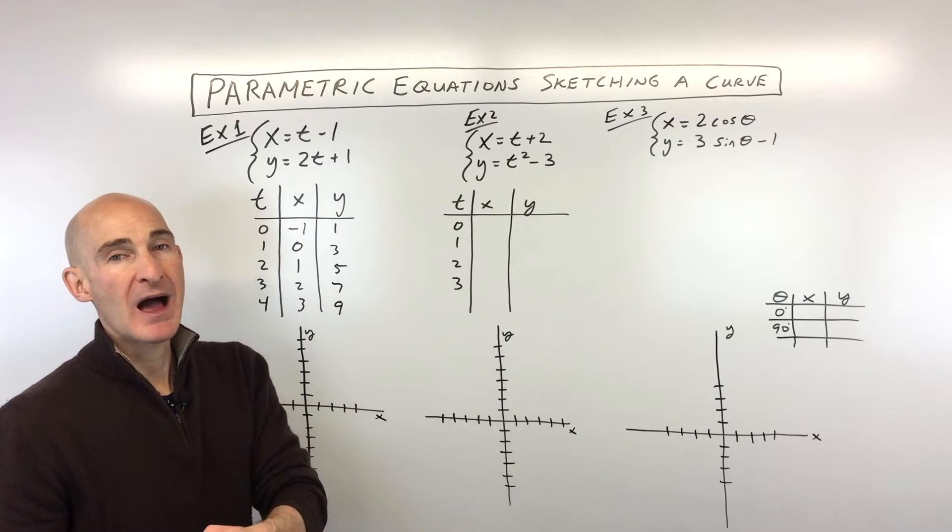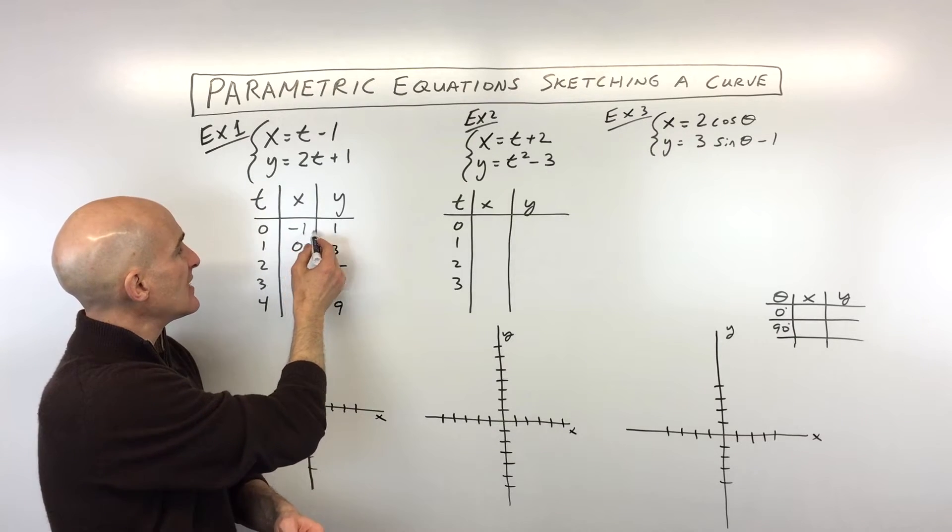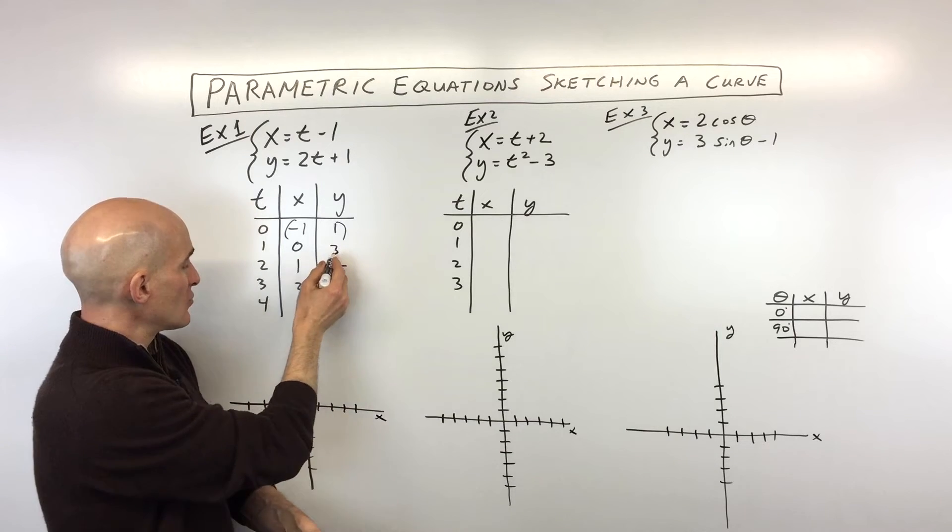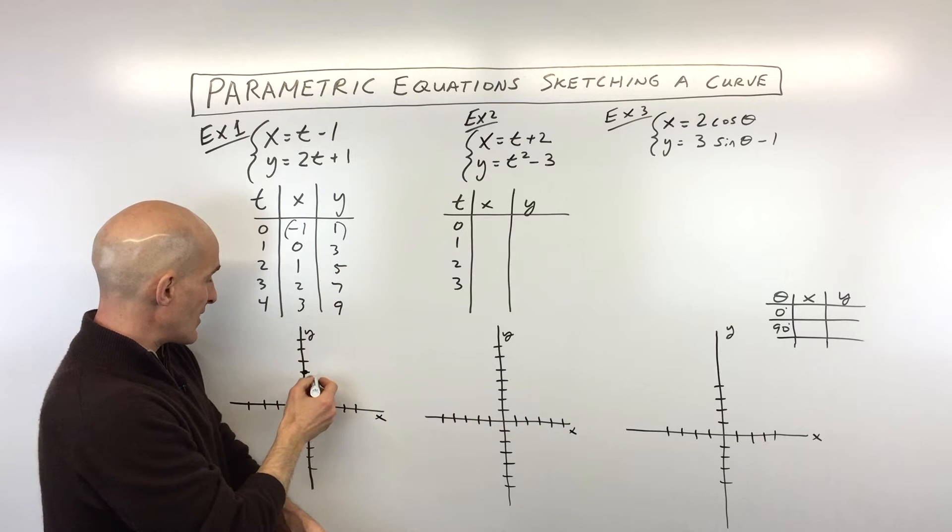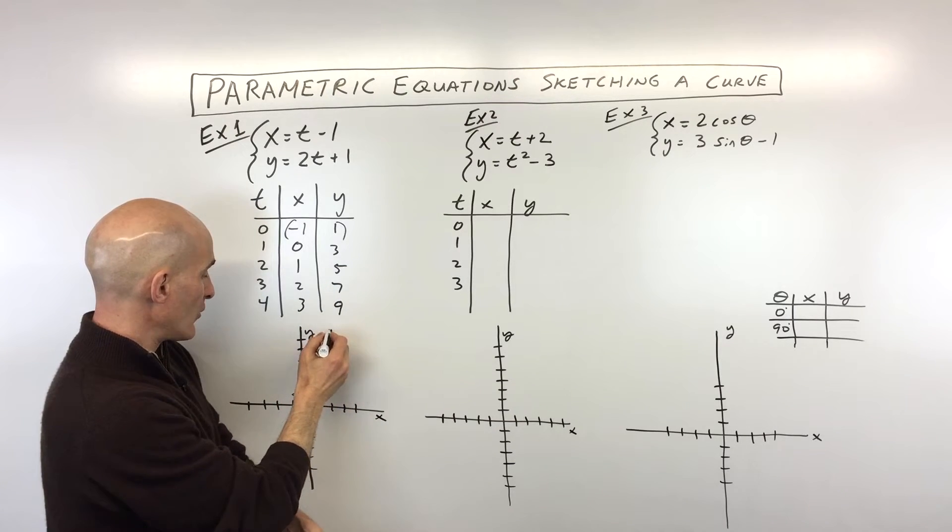So now what we're going to do is we're going to plot these points on our coordinate axis. And you can see negative one, one is going to be right here. Zero, three, that's going to be right here. One, five, that's going to be right here. Two, seven is kind of going off our graph a little bit like that.